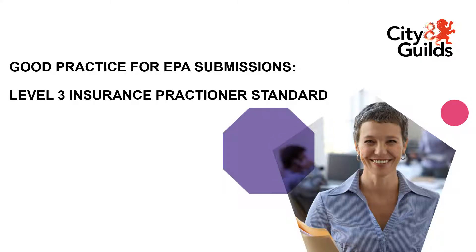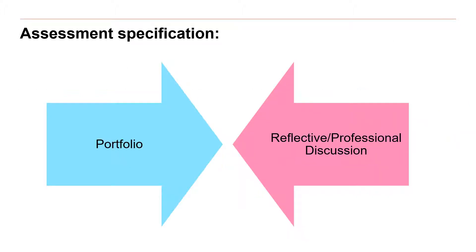Good practice for Endpoint Assessment Submissions within the Level 3 Insurance Practitioner Standard. The Trailblazer Employer Group came up with two methods for this particular standard: a portfolio and reflective professional discussion. Insurance Practitioner is different to many other standards. The training provider guides the learner in putting their portfolio together and then completes the reflective discussion. The IEPA Endpoint Assessor has no opportunity to clarify anything with the learner, so it is important that everything covered by the portfolio and reflective discussion is very clear to the IEPA.